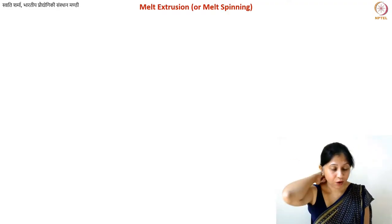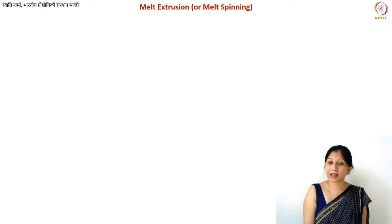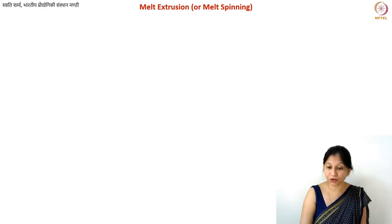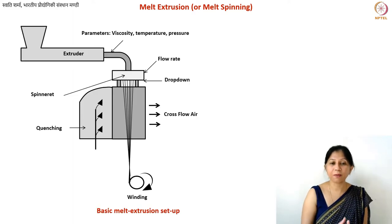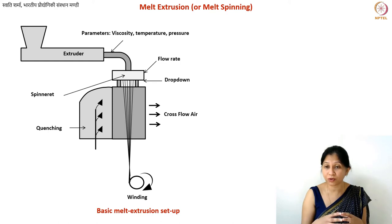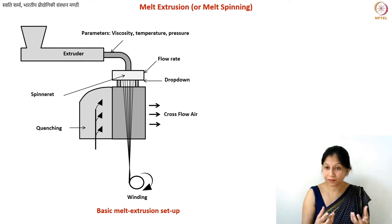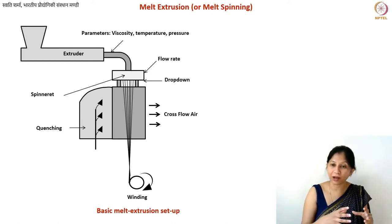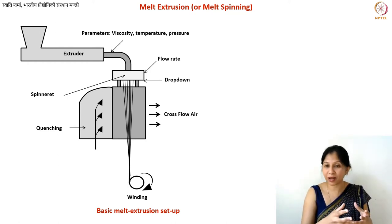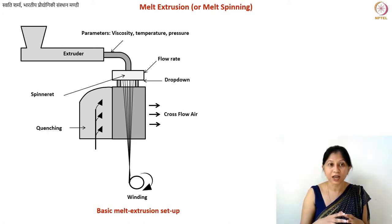The first method of manufacturing carbon fibers we are going to discuss is melt spinning or melt extrusion. This is an extrusion process — you melt a polymer, give it a certain shape, and then cool it down. This is typically used for polymers and plastics. You have a certain extruder in the setup.